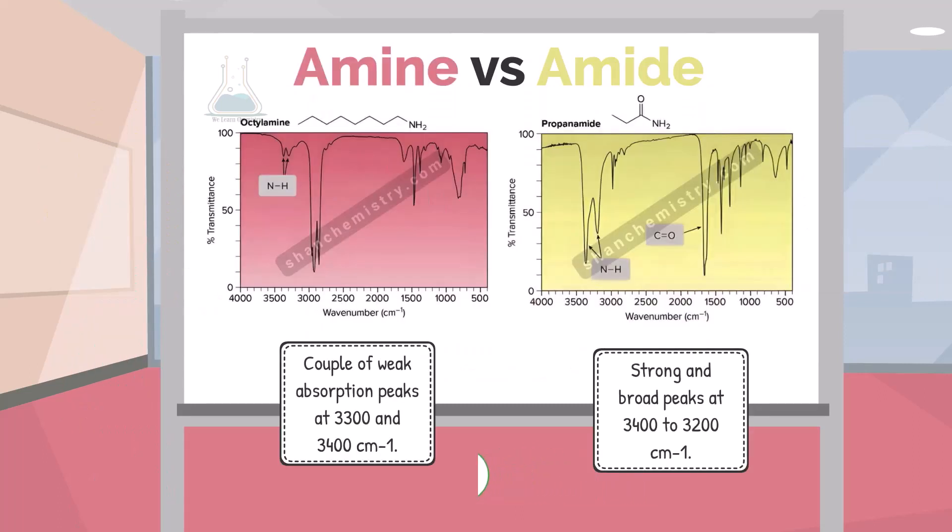Remember, the NH peaks in amine are clearly distinct from those in amide. Amide shows one or two peaks that are strong and broad at 3,400 to 3,200 per cm.